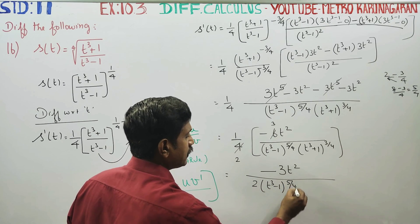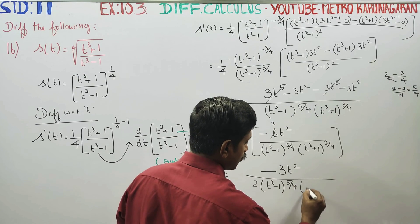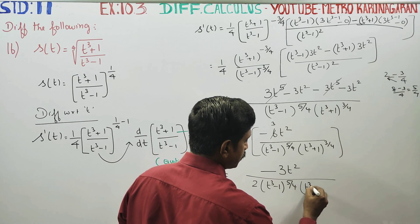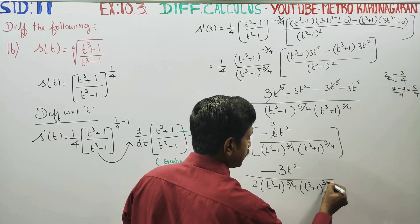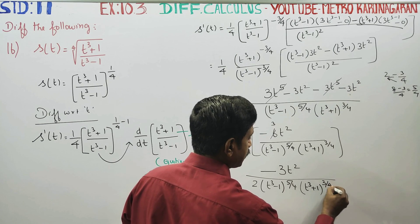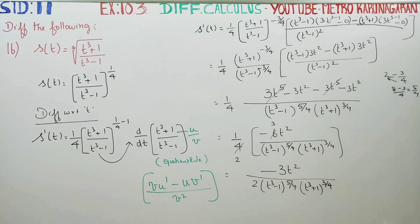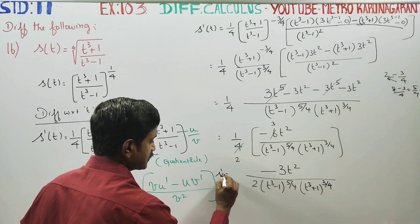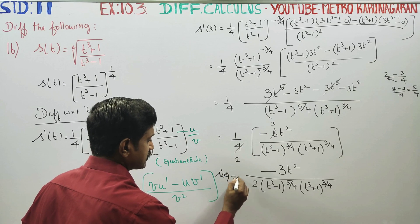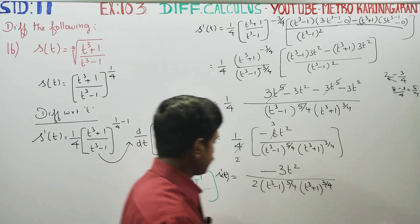Simplifying, this gives minus 3t squared divided by 2 times (t cubed minus 1) to the power 5 by 4 times (t cubed plus 1) to the power 3 by 4. This is your final answer for s dash t. Thank you.